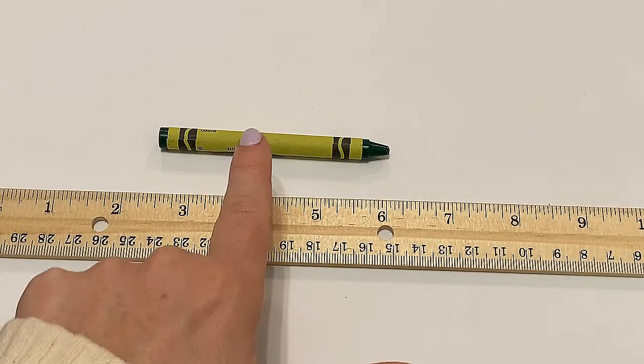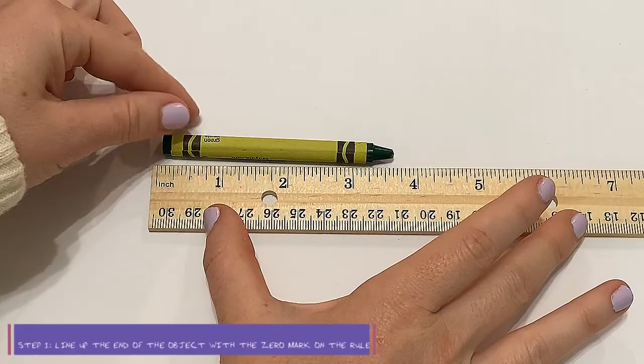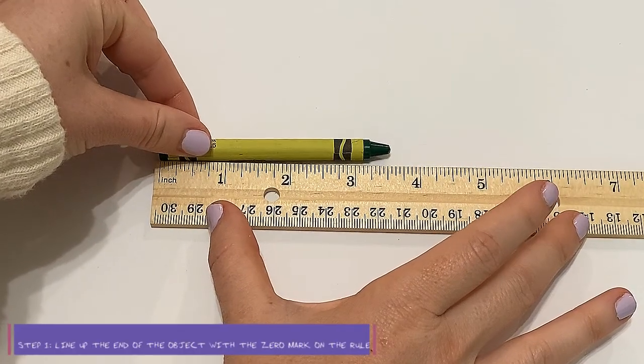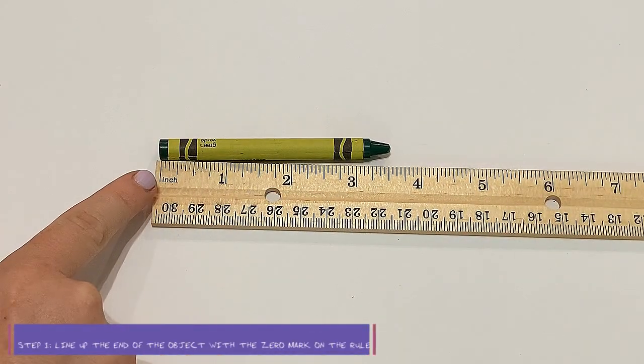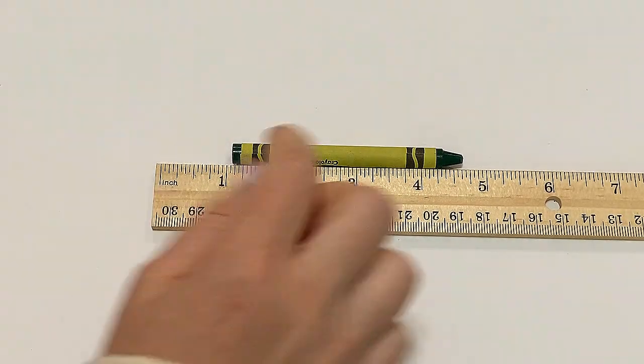Now let's try this green crayon. The first thing I need to do is make sure I am lining up my ruler with the very first mark, the zero mark. There isn't a zero there but I'm starting at the very beginning. If I don't start it up here and start with number one I would have an inaccurate reading and my measurement would not be correct.